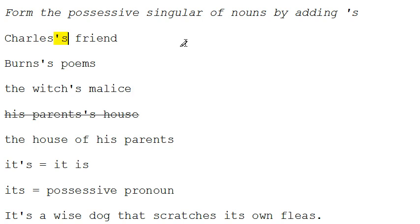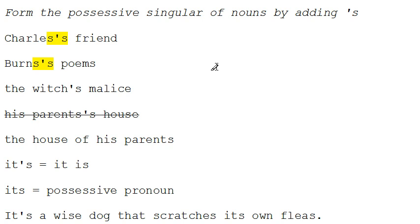Now in every case, we should add apostrophe s to the final consonant. In this particular case, s is the final consonant. So we write Charles's friend as s apostrophe s. The same thing when we're referring to the poems of Robert Burns — we would write this as s apostrophe s: Burns's poems.